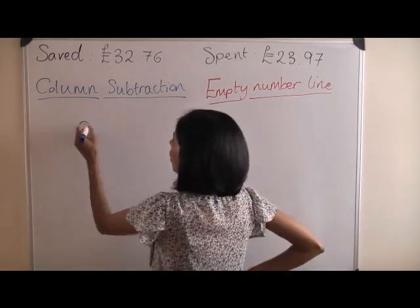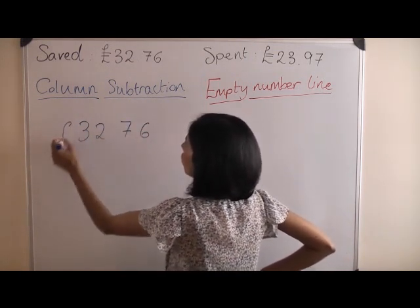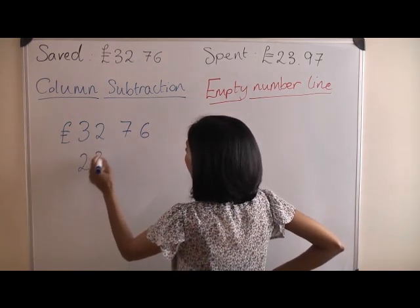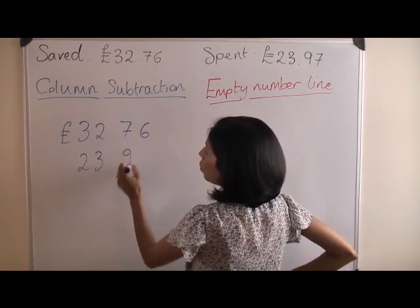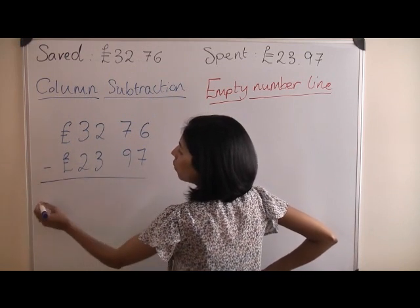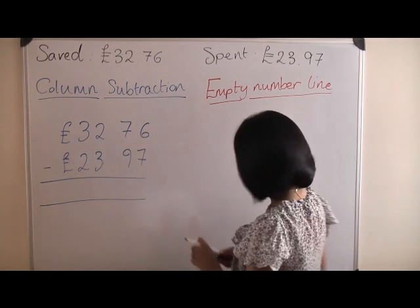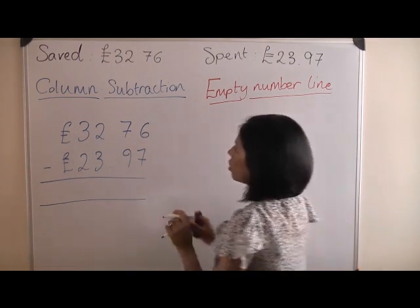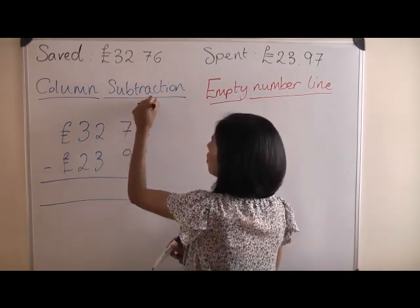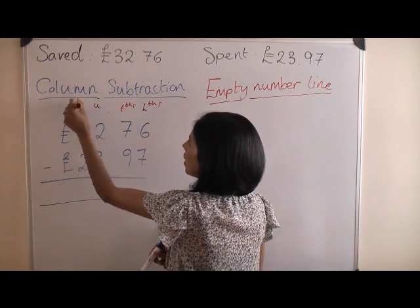The larger number always needs to go at the top, and the smaller number at the bottom. In most cases this is true. Don't forget the takeaway symbol. So now we have our hundredths, tenths, our units and tens.